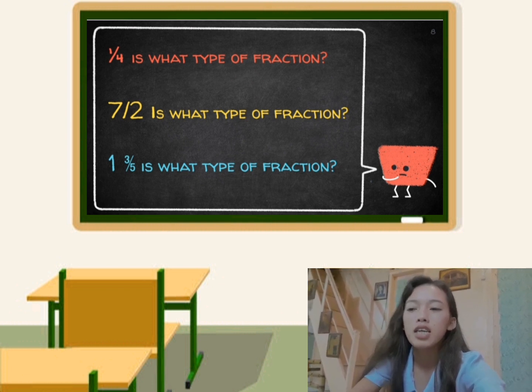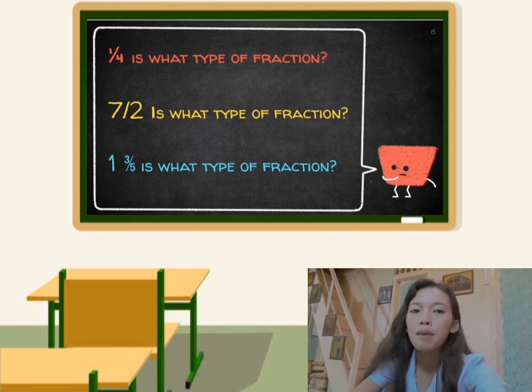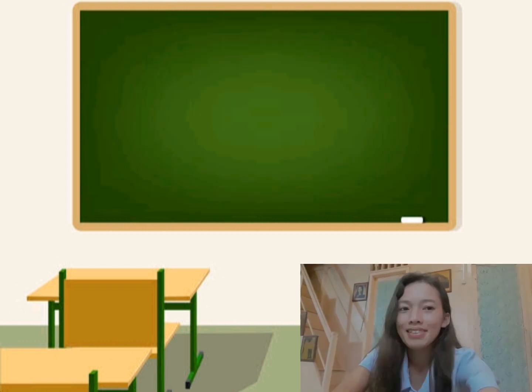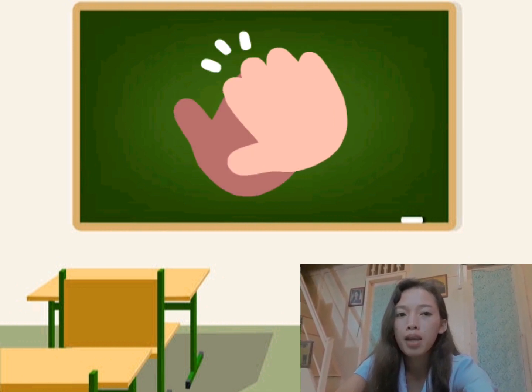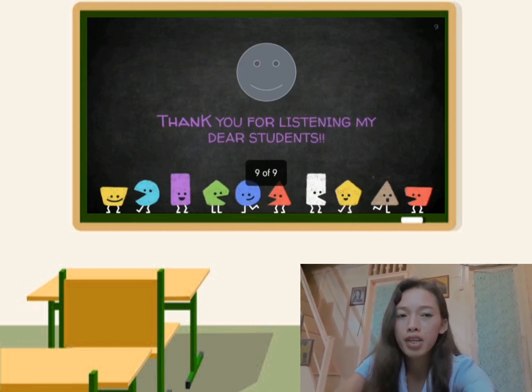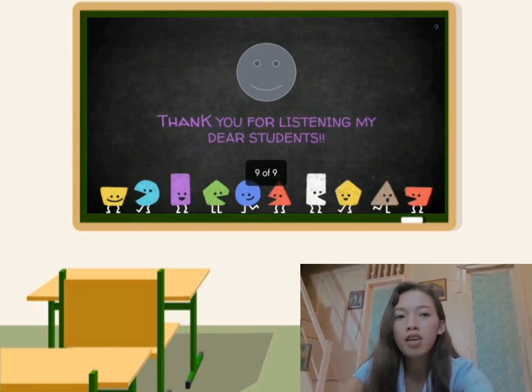Very good, 1 and 3/5 is a mixed number. And now, my dear students, you can give yourself 10 claps because you have learned something from our discussion today. Thank you and goodbye.